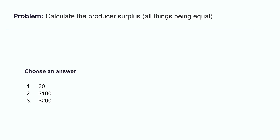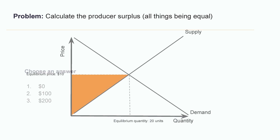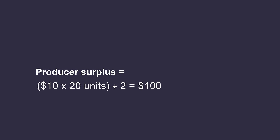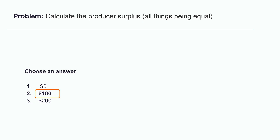Is it $0, $100, or $200? The producer surplus is equal to the equilibrium price multiplied by the equilibrium quantity, divided by 2. In this case: $10 multiplied by 20 units equals $200, divided by 2 equals $100. Answer: $100.